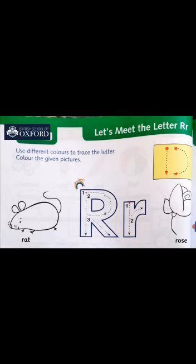Capital letter R is written as R. It is just like P — you just have to add one more arm. The sound of R is 'r', like rocket. Examples: rocket, rabbit, rat, rose.